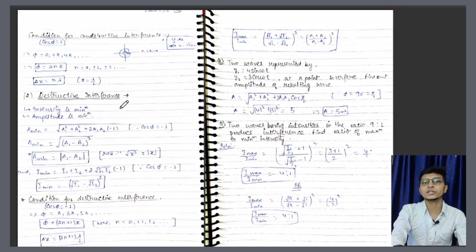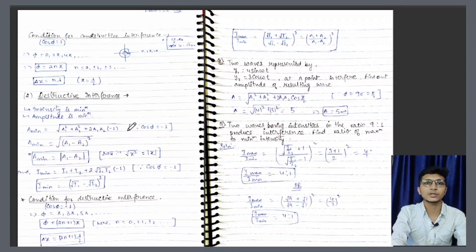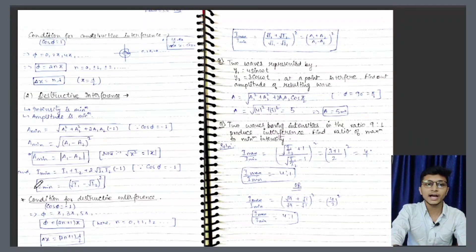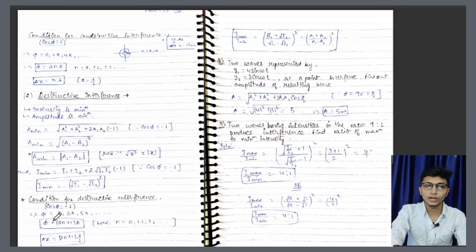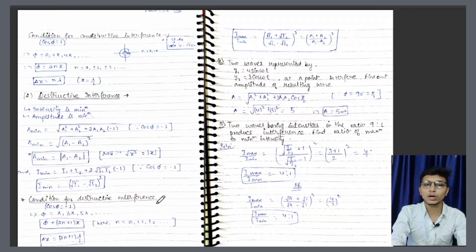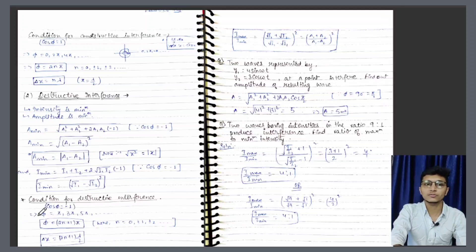Destructive interference mein jo amplitude hoga, minimum ho jayega — wahan par a1 minus a2. Basically jo bada hoga usme se chhote wale ko ghata denge. Aur intensity I minimum kya hoga: under root I1 minus under root I2 ka whole square. Aur condition yahan par bhi waise nikal sakte hain — kyunki yahan par cos phi ka value agar minus 1 ho jaye, aur isko hum general formula mein phi = (2n-1)pi likh sakte hain, aur delta x ko aise likh sakte hain.